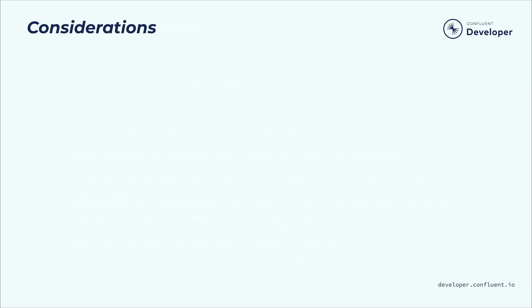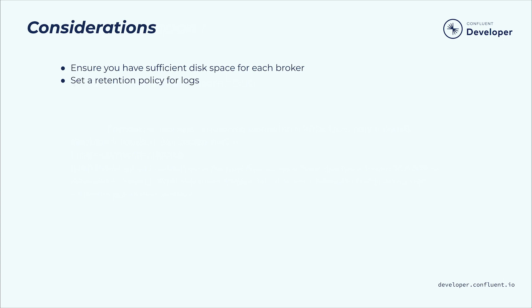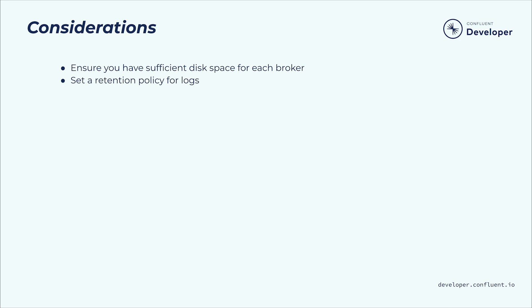There are a few things to be aware of. If you're logging to files on each broker, you should ensure there's sufficient disk space and an appropriate log4j retention policy so that you don't fill the disks. The request logger in particular can generate a lot of data very quickly, so you may want to consider enabling it only for debugging purposes or using a very small retention window. Kafka's application logs are per broker. To get a complete picture of what is happening in your system, you'll need to consolidate the logs from all brokers in a cluster, and you could even direct the log output to a Kafka topic or another cluster.